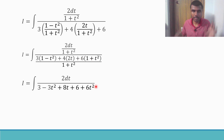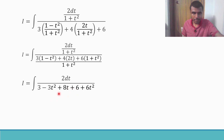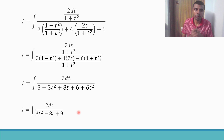Now simplify: −3t² + 6t² = 3t², and 6 + 3 = 9, and we have 8t. So the denominator becomes 3t² + 8t + 9. The integral is now 2dt divided by (3t² + 8t + 9).